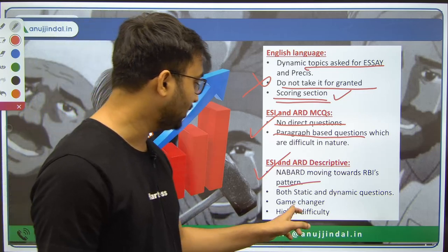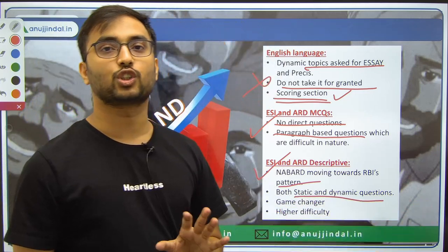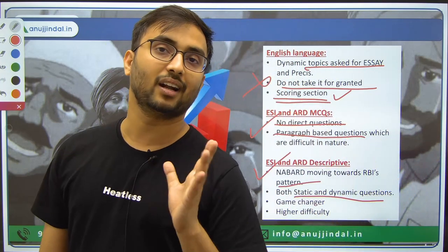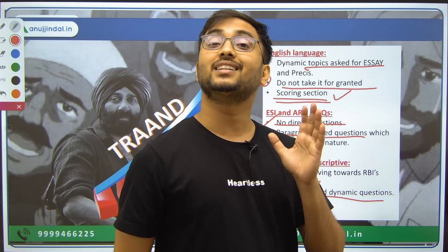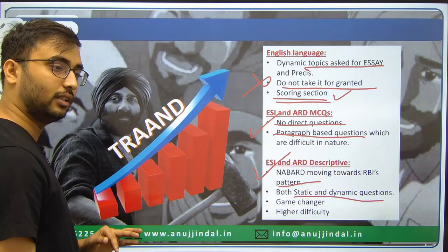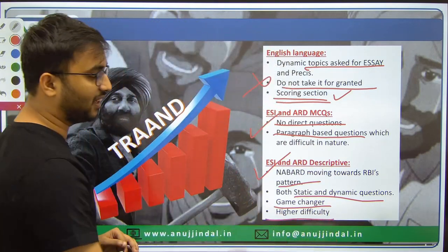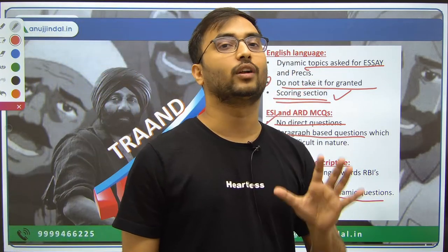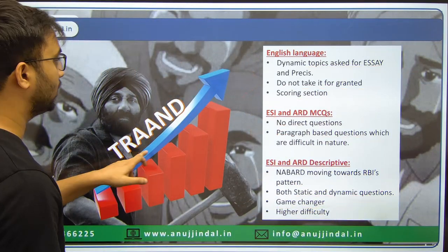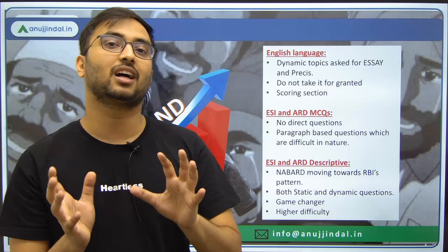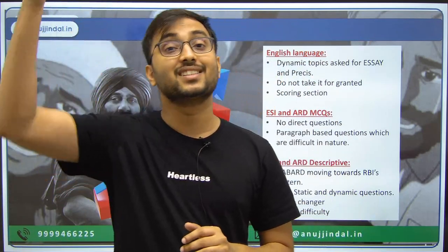For ESI and ARD Descriptive, NABARD is moving towards RBI's exam pattern. Both static and dynamic questions are there. For example, in 2021 the compulsory ARD question was on crossbreeding (static), but in 2022 it was PM Matsya Sampada Yojana (current). Both static and current affairs are important. This is the game changer but also the most difficult section. We have now covered the complete Phase 2 trend analysis.